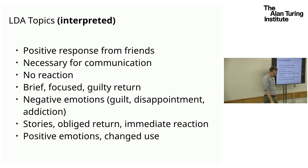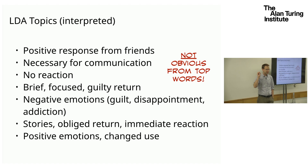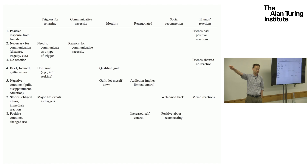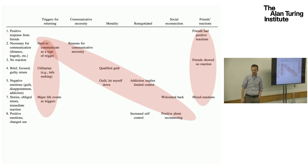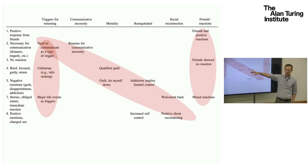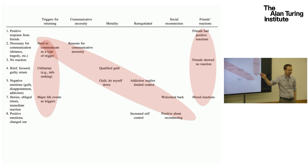We made a grid with grounded theory categories on top and LDA topics on the side, identifying the discourses that shared both dimensions in the intersecting cells. What you'll notice is a lot of correspondence — it's not one-to-one, but there are many empty cells, making it a pretty strong match.